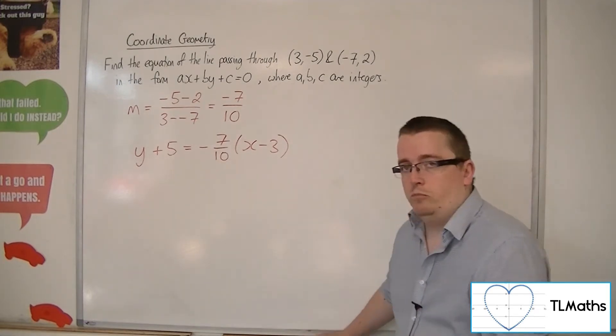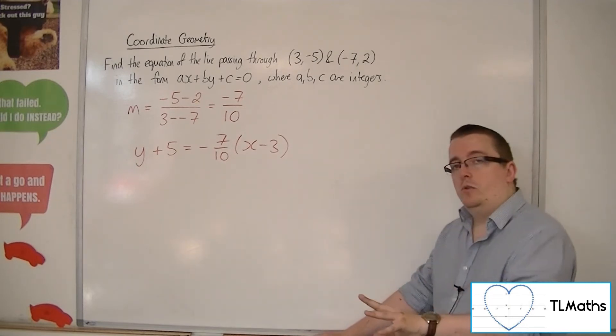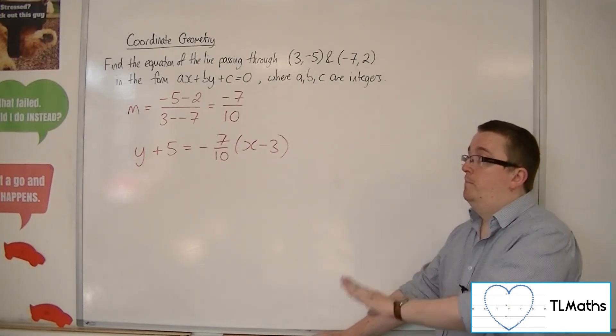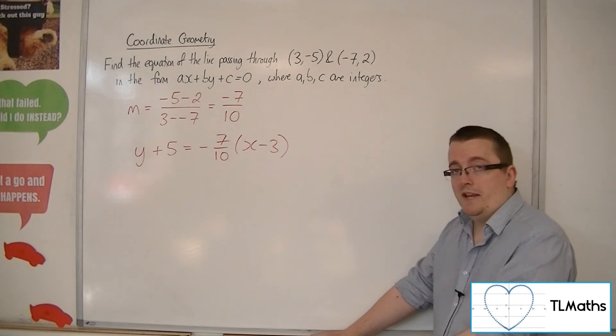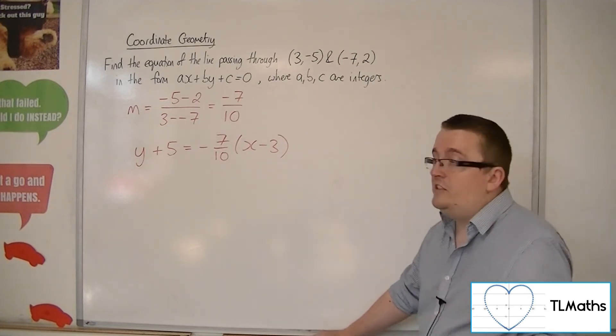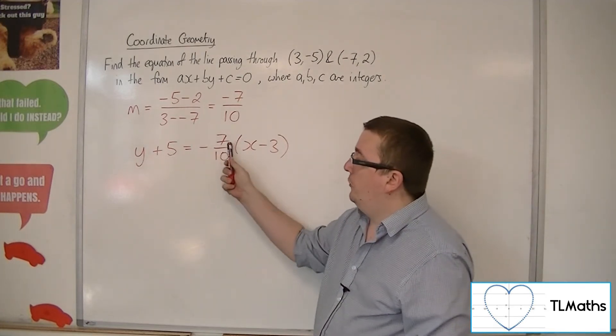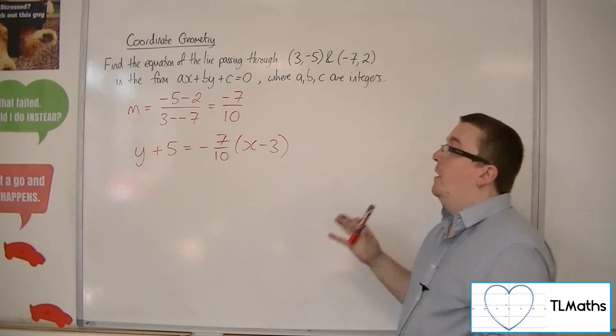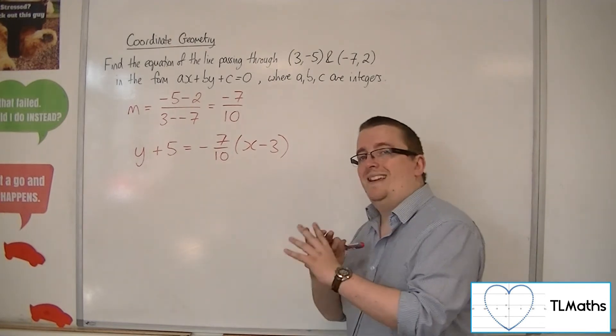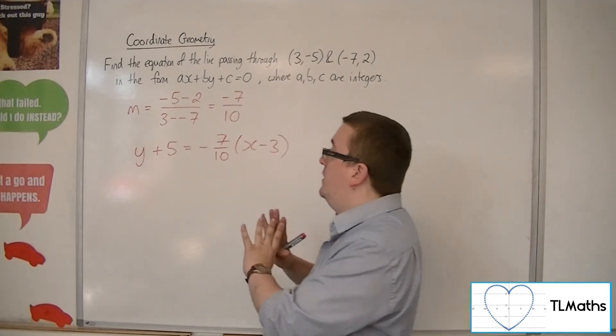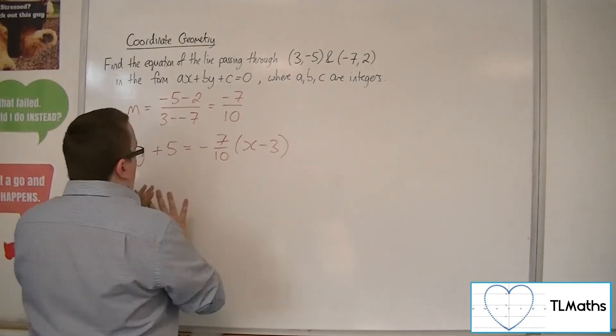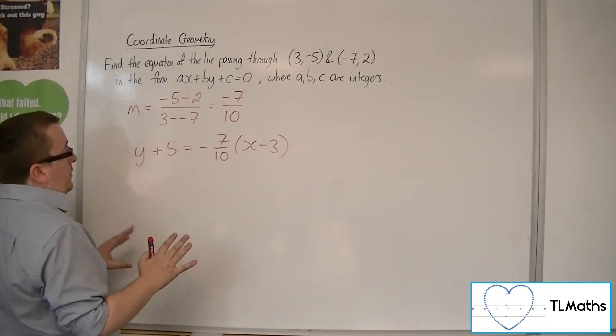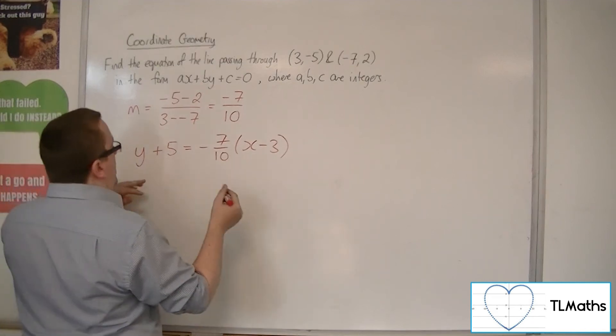So to get rid of the problem of the fractions, what you can do is you can multiply both sides by the denominator of the fraction. Now obviously this doesn't matter if this is a nice whole number, but because it's not in this case, to get rid of the fraction, if I multiply everything by 10, then I won't have to deal with fractions. So multiplying everything by 10,